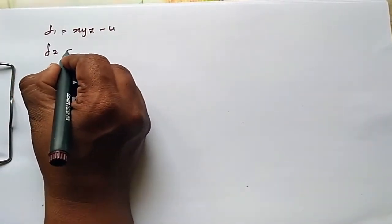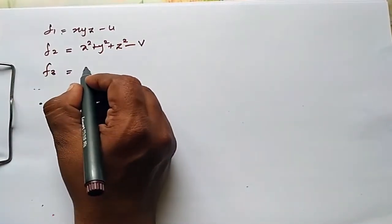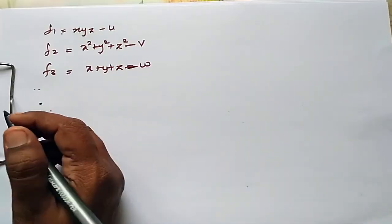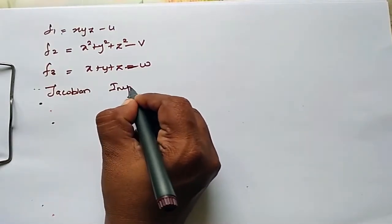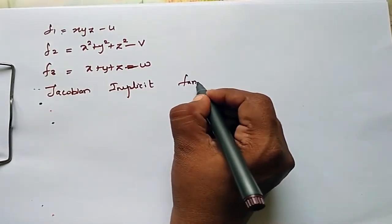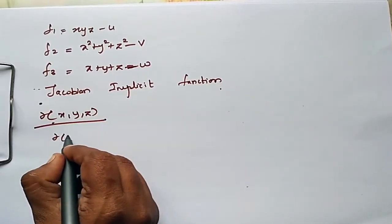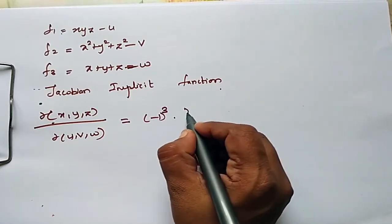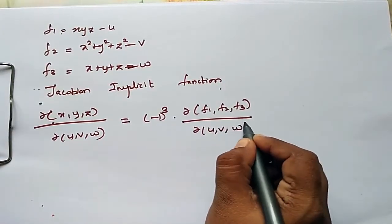f1 is equal to x·y·z minus u. f2 is equal to x square plus y square plus z square minus v. f3 is equal to x plus y plus z minus w. By the Jacobian implicit function, ∂(x, y, z) / ∂(u, v, w) is equal to minus 1 the whole cube into ∂(f1, f2, f3) / ∂(u, v, w).